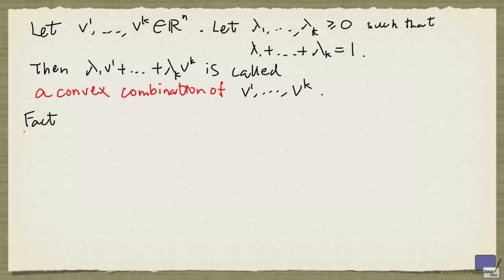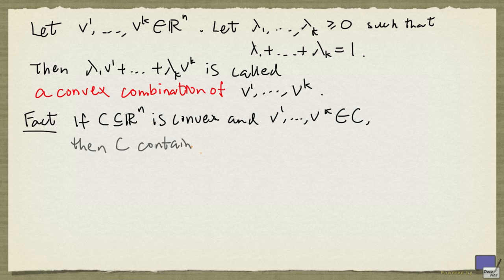There's a fact that can be easy to show by induction. If C, a subset of Rn, is convex, and if V1 up to Vk are in C, then C contains all convex combinations of V1 up to Vk.